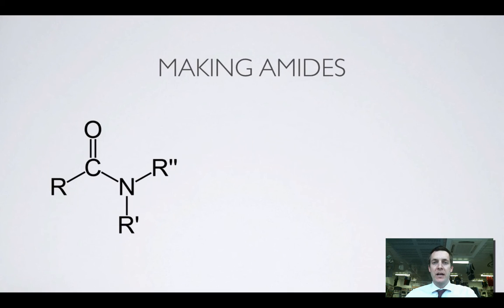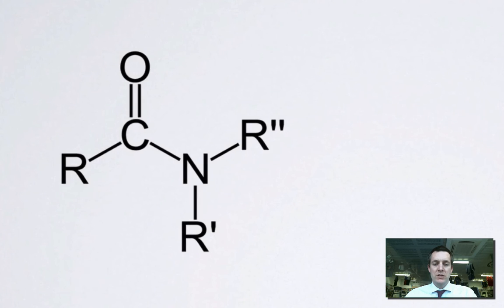Now, if we wanted to make an amide, and this becomes quite important when we look at the polymerization section of the course and when we look at proteins, we need to think about what it is that we can, I suppose, what the amide looks like it's made out of.